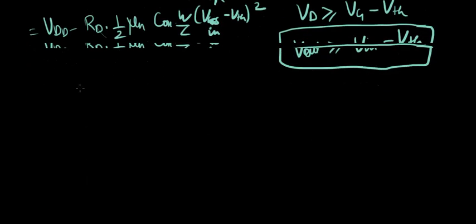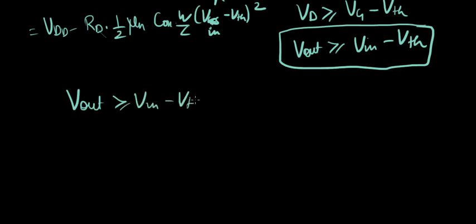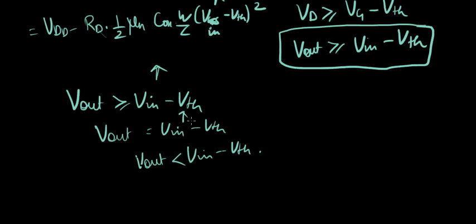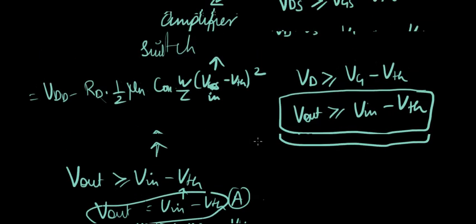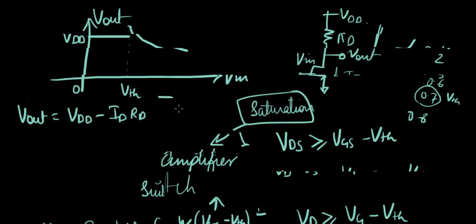But hold on again. How long is that going to drop like that? How long are we going to be in saturation? We have seen here that the most important condition for us to be in saturation is that Vout be greater than VIN minus VTH. Here, VIN is increasing continuously. So at one point in time, Vout is going to be equal to VIN minus VTH. And a slight increase further than that is going to put Vout to be lesser than VIN minus VTH.